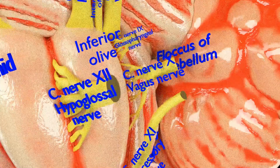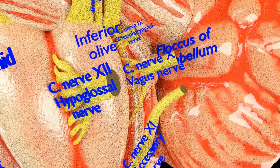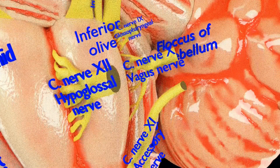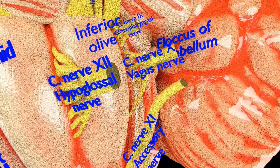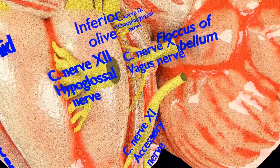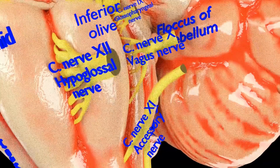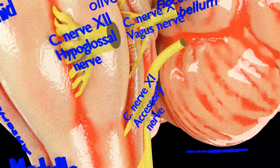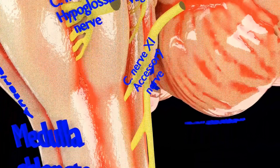Lateral to these rootlets are the olives — swellings in the medulla containing the underlying inferior olivary nuclei, with various nuclei and efferent fibers. Lateral and dorsal to the olives are the rootlets for cranial nerve 9, the glossopharyngeal nerve; cranial nerve 10, the vagus nerve; and cranial nerve 11, the accessory nerve.